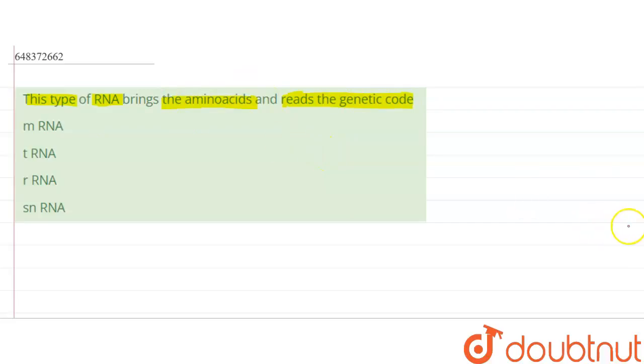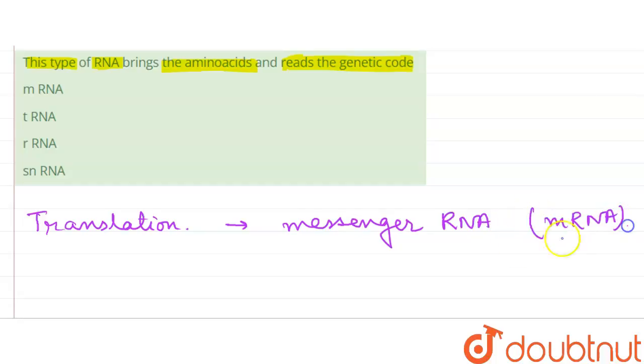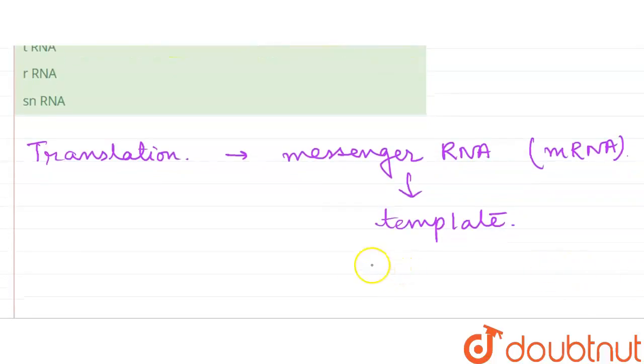So before we select the correct answer, let's have a brief idea about the translation process. Basically during translation, the messenger RNA, that means the mRNA, provides the template for the synthesis of the chain of amino acids to form a protein.